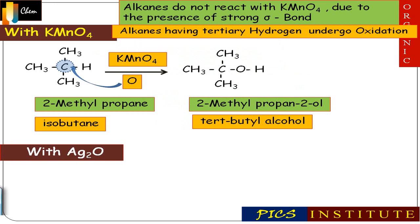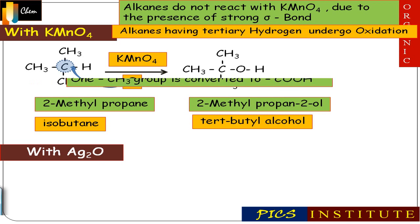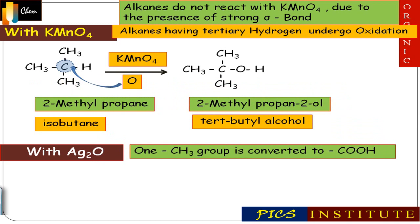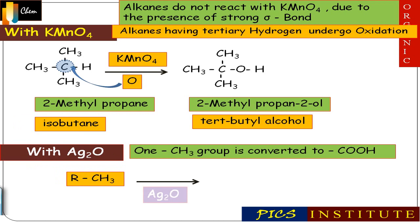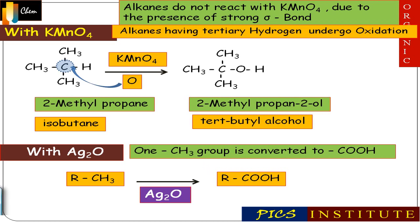Reaction with silver oxide (Ag2O): the function of silver oxide is to oxidize one methyl group to a carboxylic group. For example, if you have an alkyl group with CH3, on reaction with Ag2O it forms carboxylic acid.